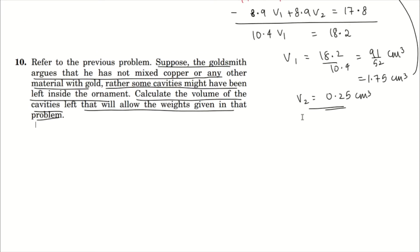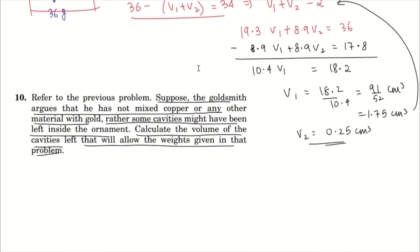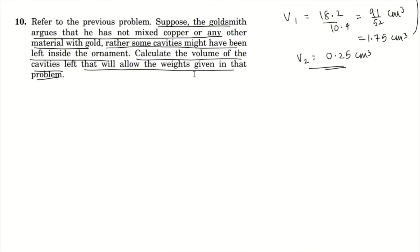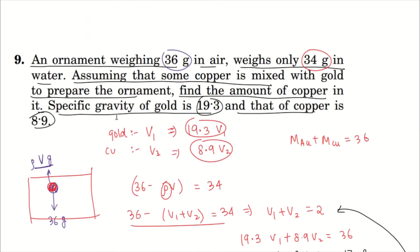We're referring to the previous problem, problem number 9, in which an ornament when in air had a mass of 36 grams, and when placed in water its weight was calculated to be 34 grams. Now the goldsmith says that there are no impurities mixed here. We previously assumed that copper was mixed.